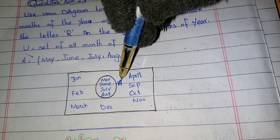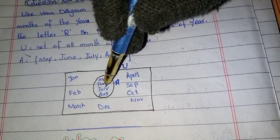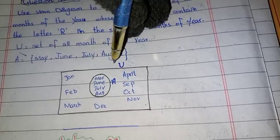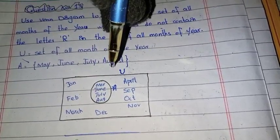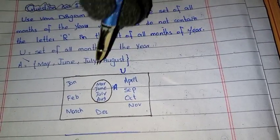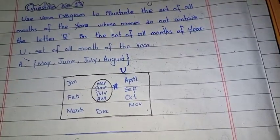In set A, we have May, June, July, and August — the months whose names do not contain the letter R. The remaining months of the year are placed outside the circle but inside the rectangle representing the universal set. That is the complete Venn diagram.